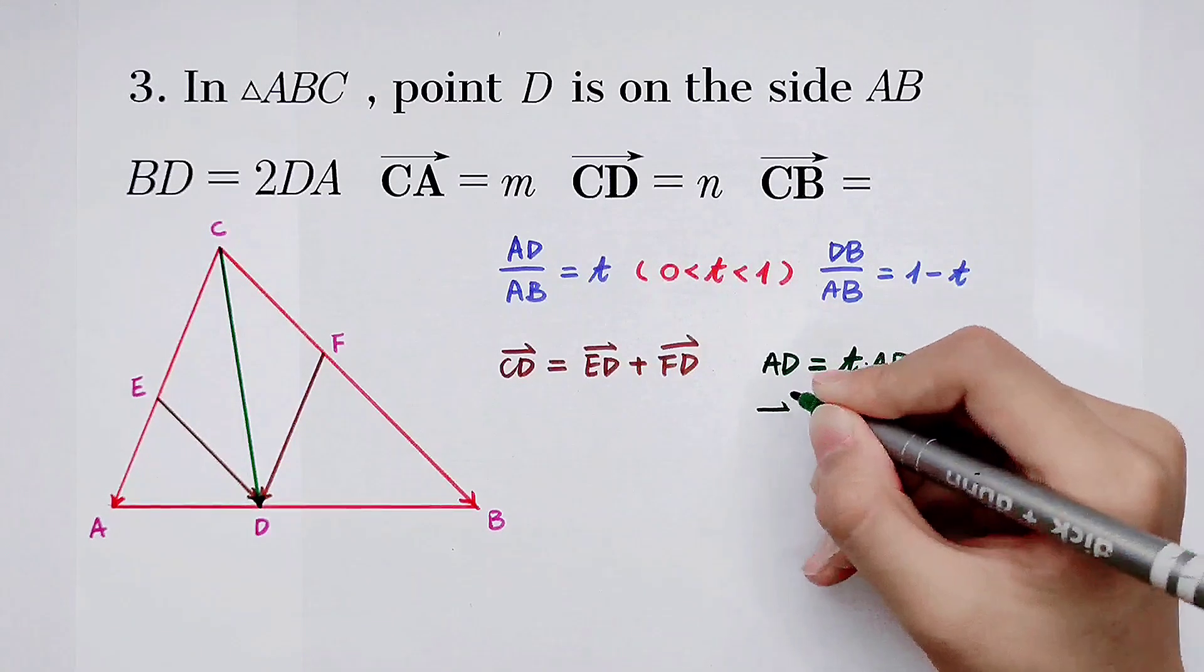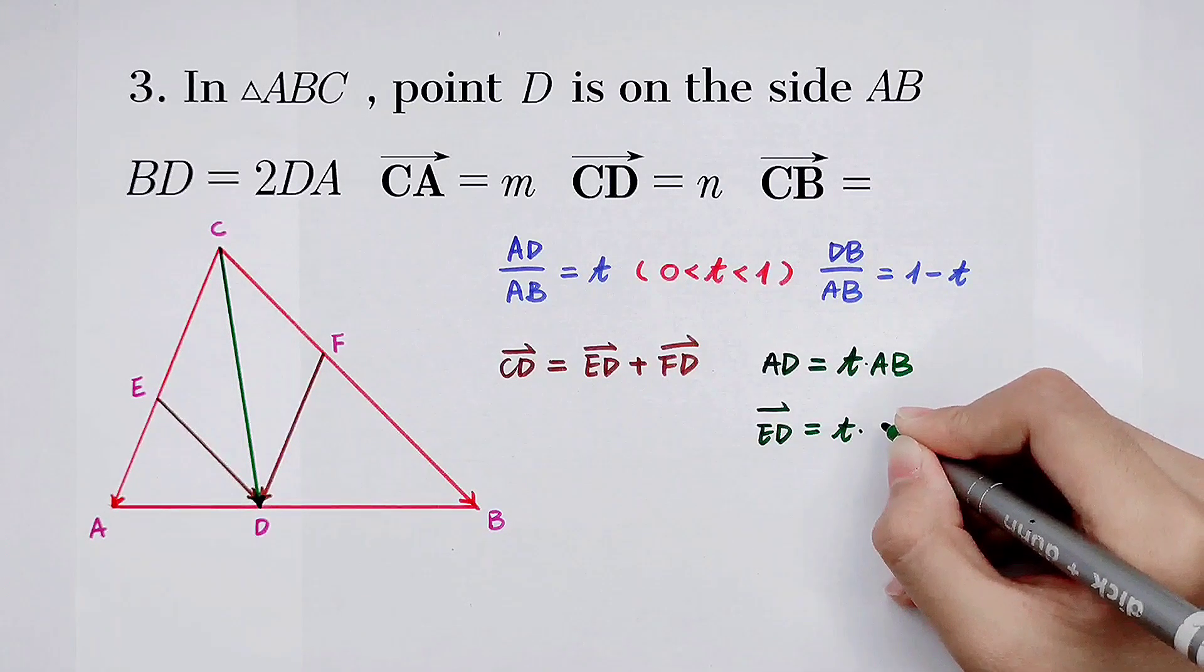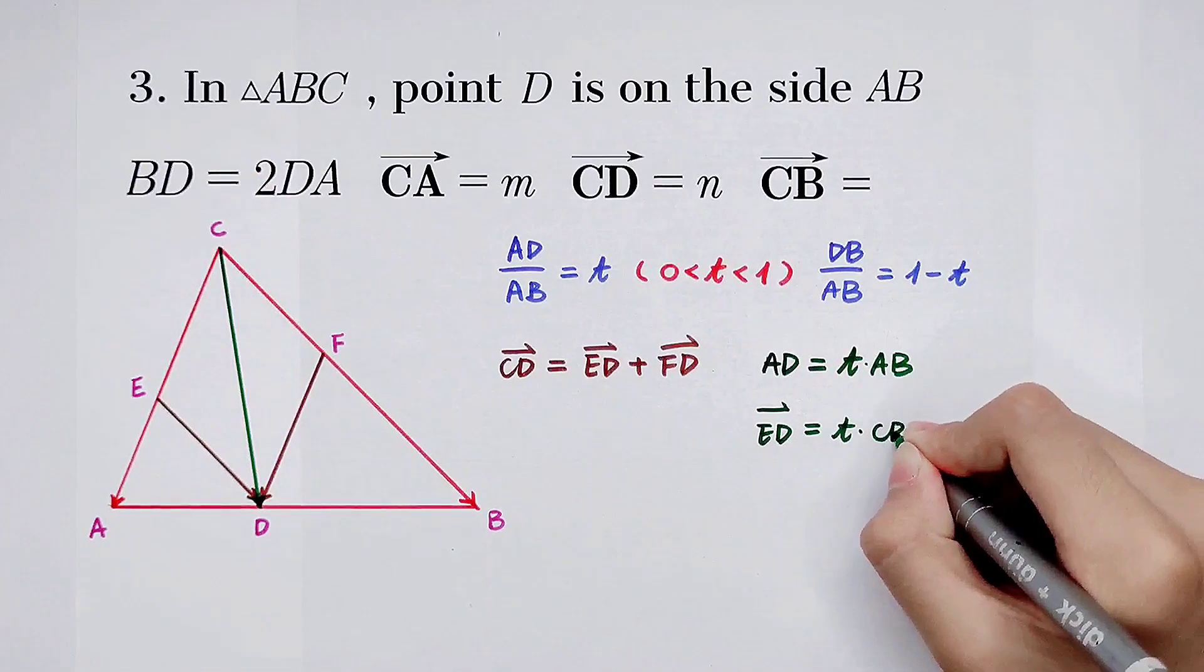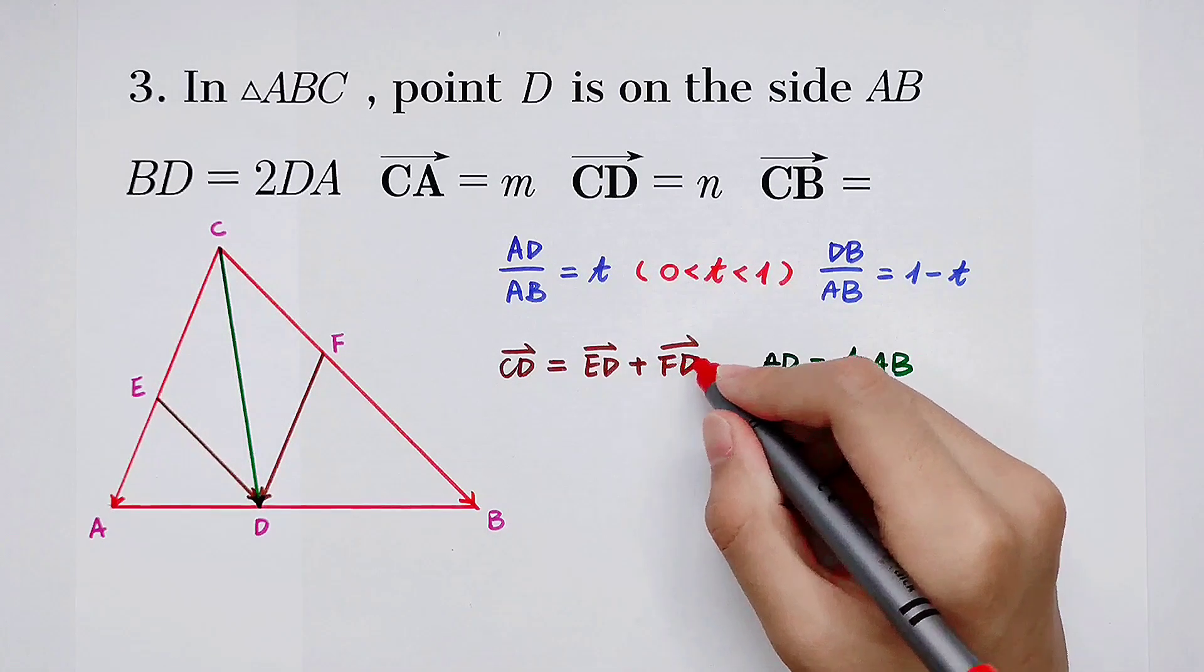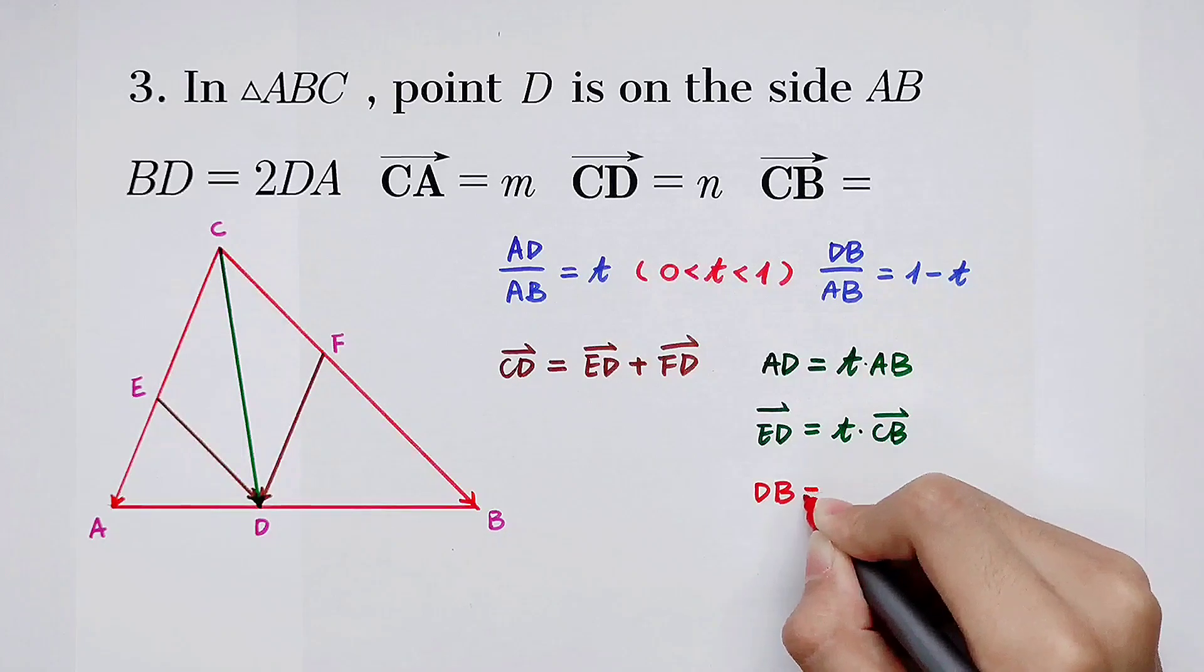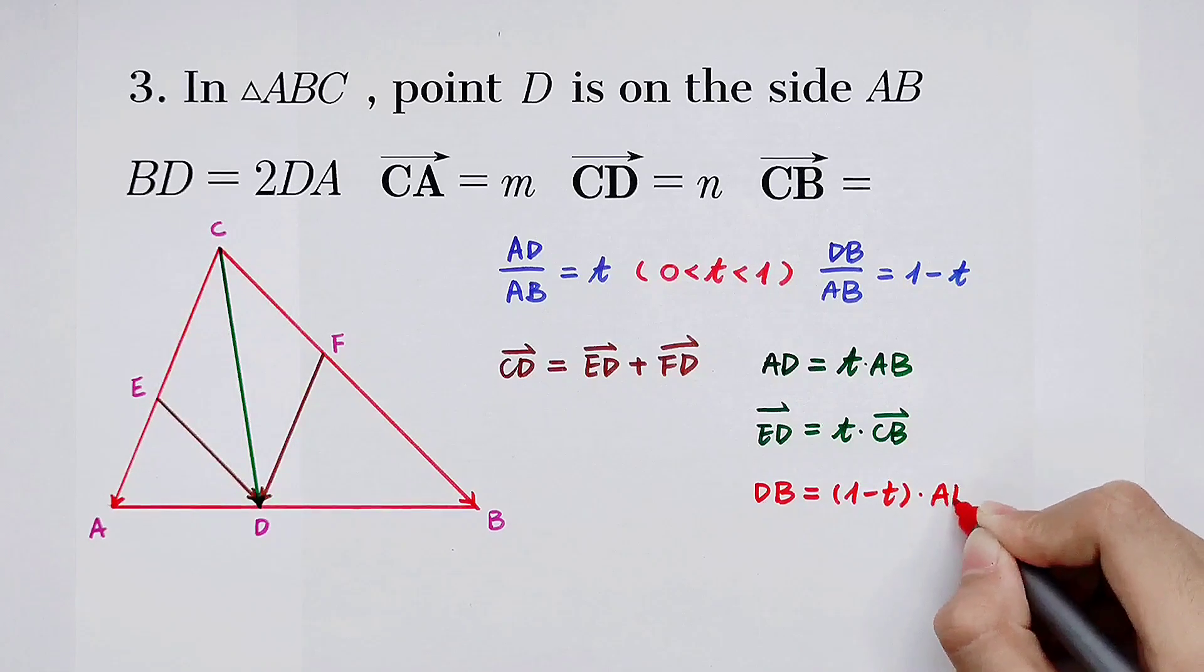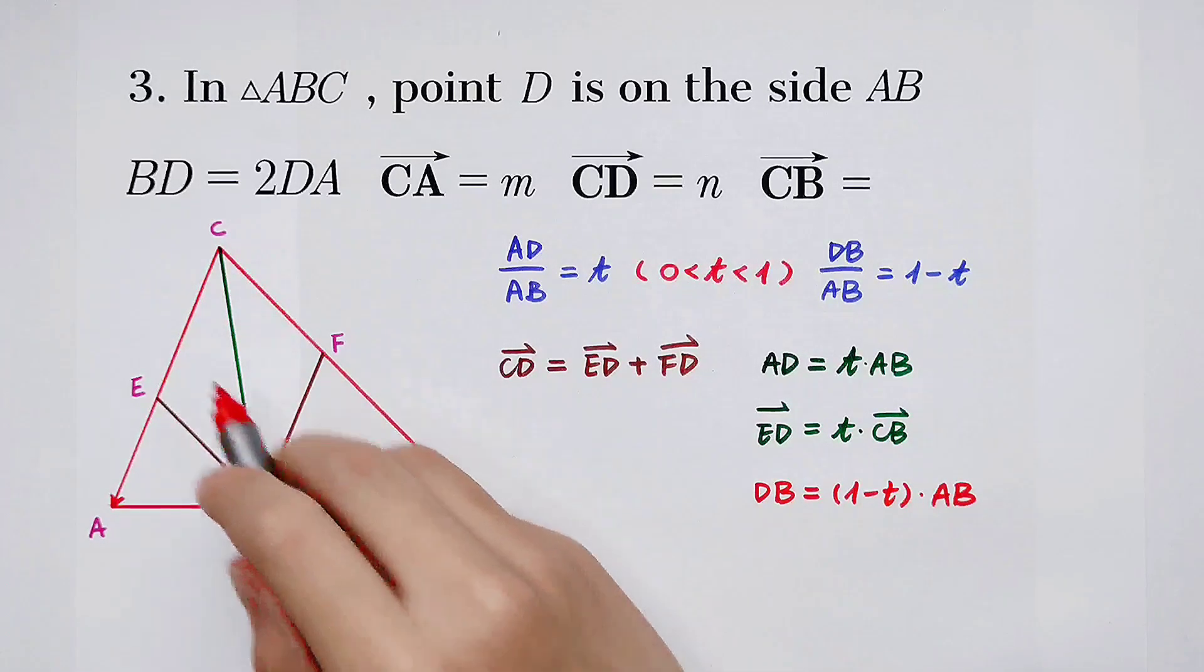And AD is equal to T times AB. So the vector ED is also equal to T times CB. And now, what's the value of the vector FD? According to this, we can solve DB is equal to 1 minus T, then times AB. Also, pay attention to the triangle BDF and the triangle BAC. They are also similar.